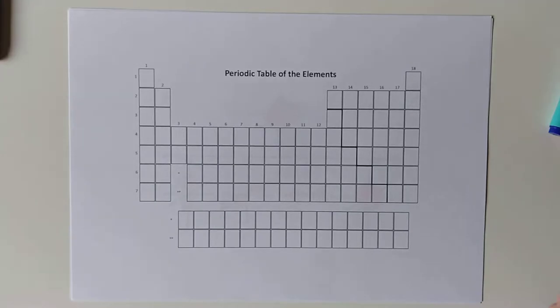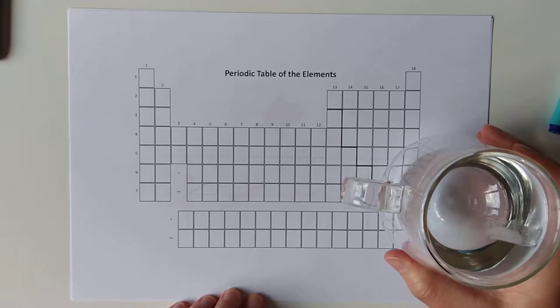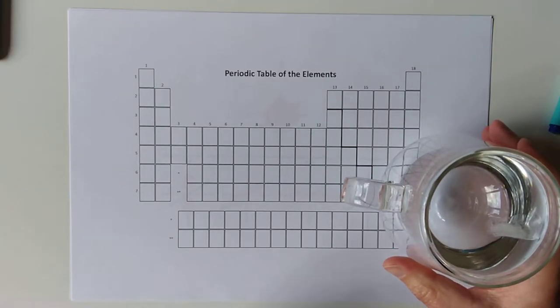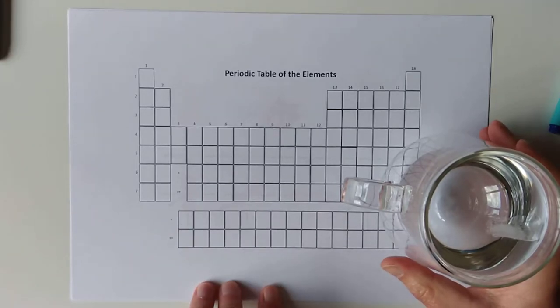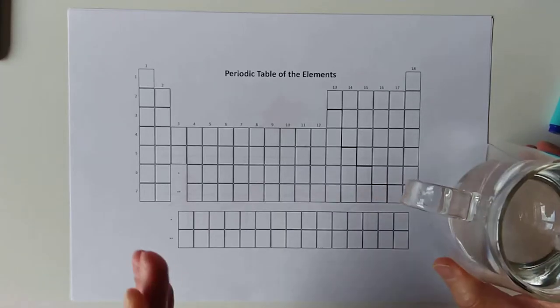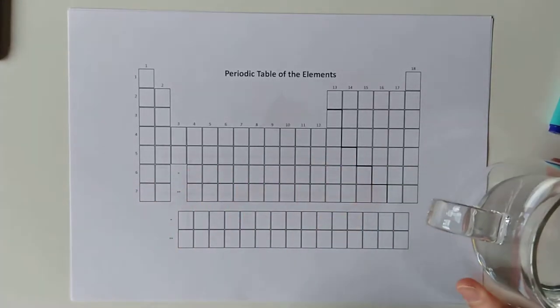But we had Aufbau, which was the order of filling of energy levels, which is relatively common sense, you would think. We had Hund's rule of maximum multiplicity, which I called seats on a bus, in that electrons do not like to share orbitals of degenerate energy, equal energy, until they're absolutely forced to. And before that point, before they're forced to start sharing, they'll occupy individual orbitals with a parallel spin to each other.